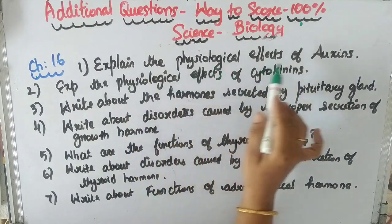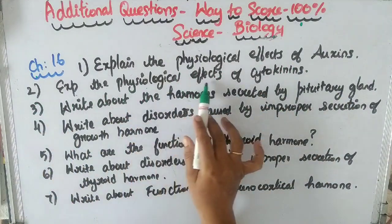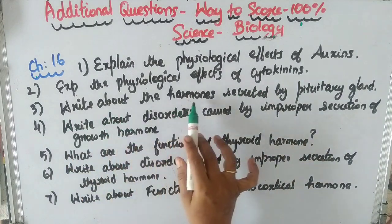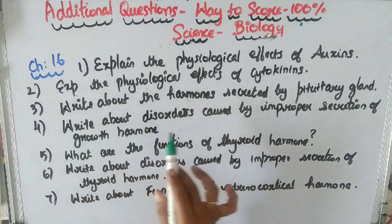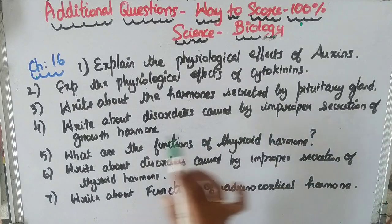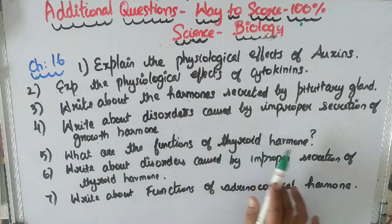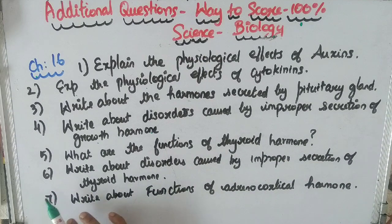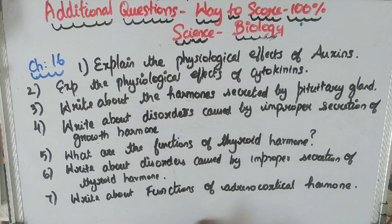In chapter 16: Question 1: Explain the physiological effect of auxins. Question 2: Explain the physiological effect of cytokinins. Question 3: Write about the hormones secreted by the pituitary gland. Question 4: Write about the disorders caused by improper secretion of growth hormone. Question 5: Write about the functions of thyroid hormone. Question 6: Write about the disorders caused by improper secretion of thyroid hormone. Question 7: Write about the functions of adrenocortical hormone.